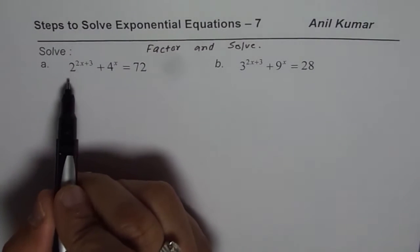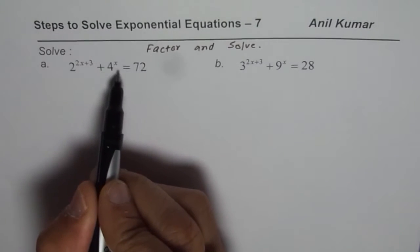So the first question here is 2 to the power of 2x plus 3 plus 4 to the power of x equals 72.